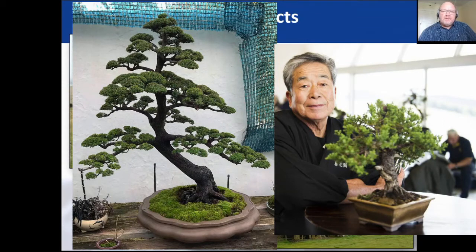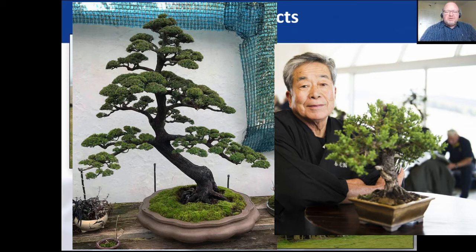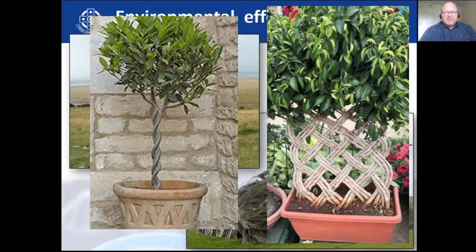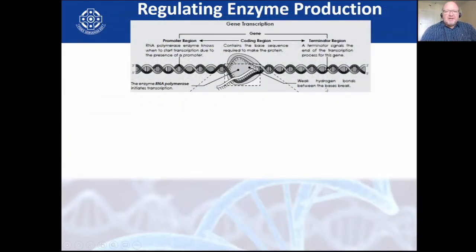Another example is bonsai trees. You put them in a small container, constantly cut their roots and their growth, and shape them — that is obviously not what their genes want them to do; their genes want them to grow big. Similarly, you can buy plants whose stems have been shaped into braided or plaited forms. Again, these are environmental effects — this is 100% natural in terms of the plant's response.